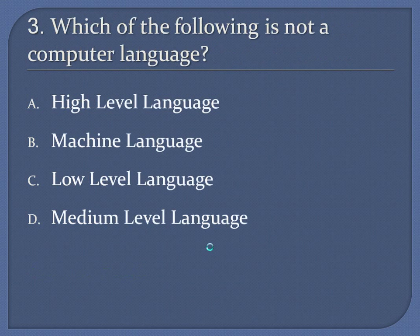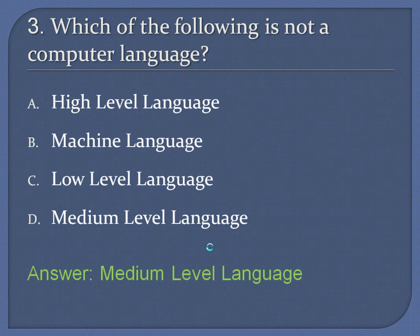Question 3: Which of the following is not a computer language? A. High-level language. B. Machine language. C. Low-level language. D. Medium-level language. Answer: Medium-level language.